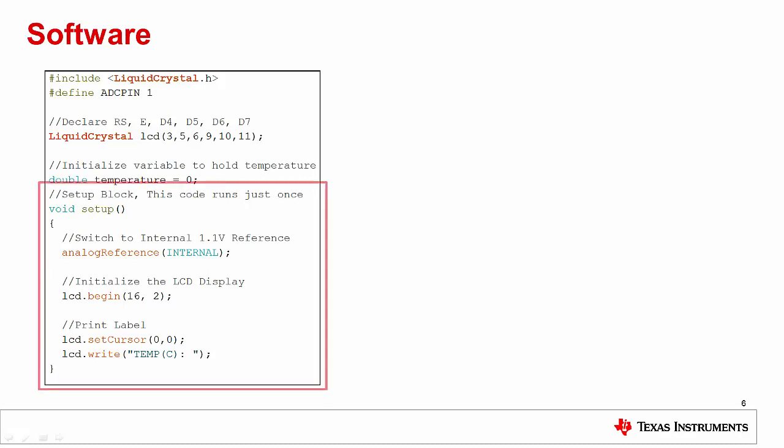Within the setup block, which is the code we want executed only one time, we first switch the ADC to use the internal 1.1 volt reference by using the analog reference command. Then we initialize our LCD display by using LCD.begin.